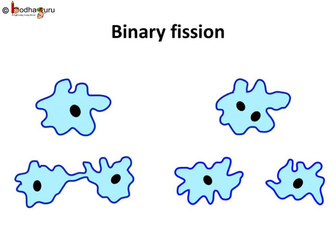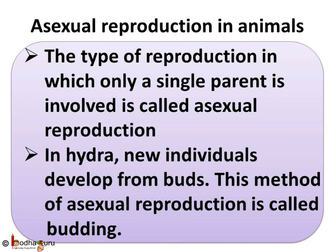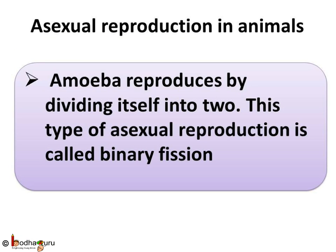Binary fission is seen in most unicellular organisms. To sum up what we learnt today: the type of reproduction in which only a single parent is involved, and male and female gametes are not involved, is called asexual reproduction. In hydra, new individuals develop from buds — this method is called budding. Amoeba reproduces by dividing itself into two — this type of asexual reproduction is called binary fission.